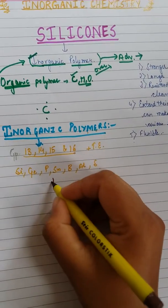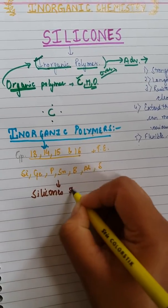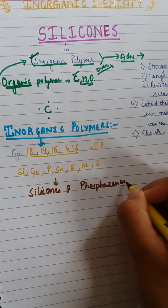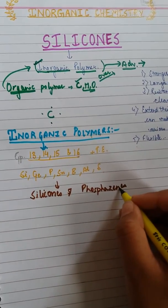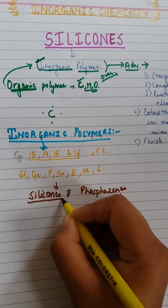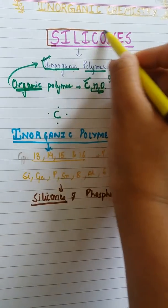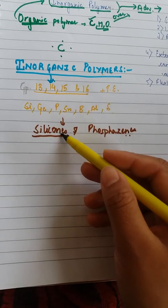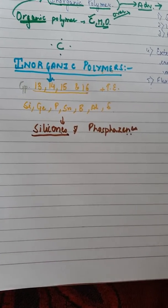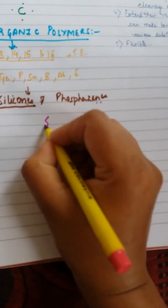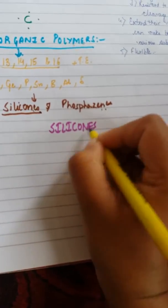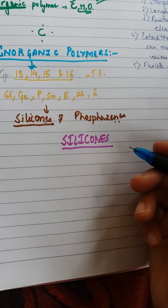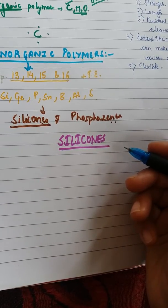The two main types of inorganic polymers that are mainly studied due to their variety of applications are silicones and phosphazines. My main topic here is silicones. As the name suggests, silicones contain the silicon atom — they are polymers of organosilicon derivatives.